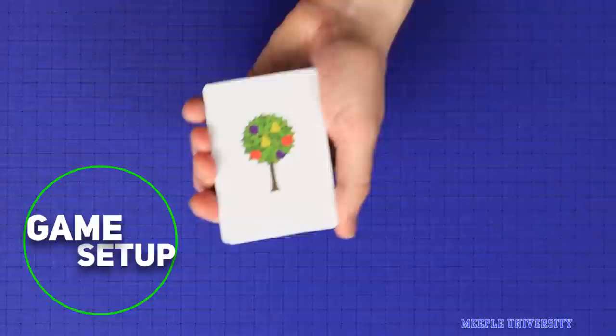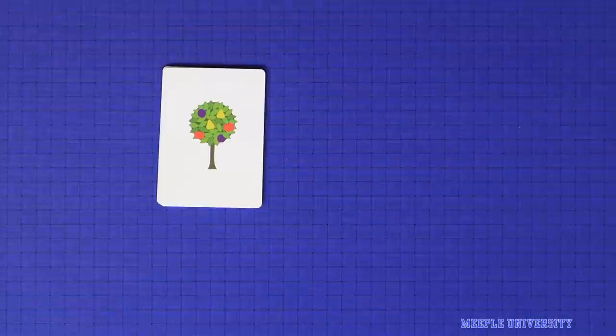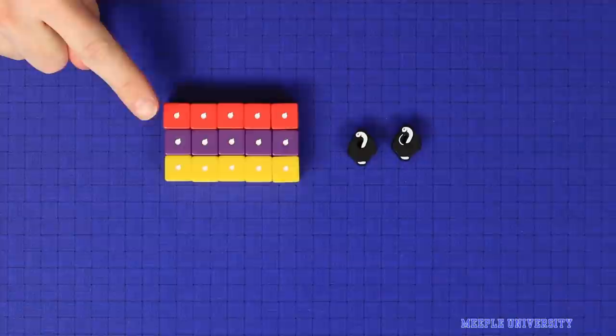To set up the game, shuffle the 18 Orchard cards and then take 9 at random. You will only use these 9 in the game, and the 18 are provided to give you variability from game to game. Deal the top card of this deck face up into the centre of the table and then take another 2 which form your starting hand.